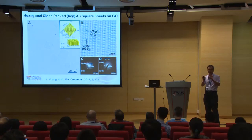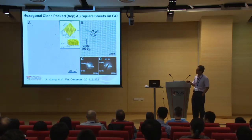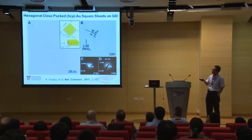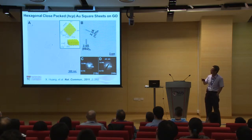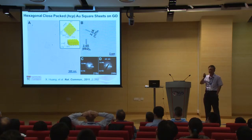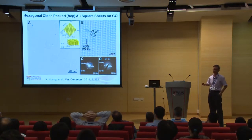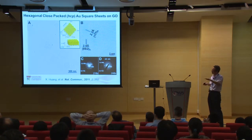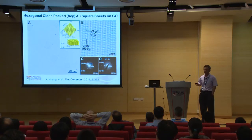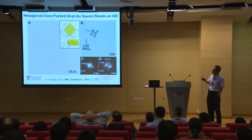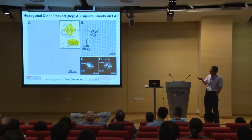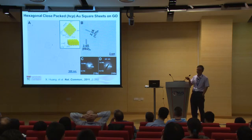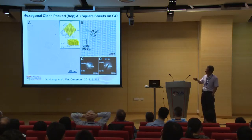Although defects can produce FCC structure during synthesis, this is the first time we synthesized pure HCP structure under mild conditions using graphene oxide as a template. This HCP structure is stable for several months. If you allow the gold to continue growing to about 6 nanometers, the HCP disappears and FCC appears.